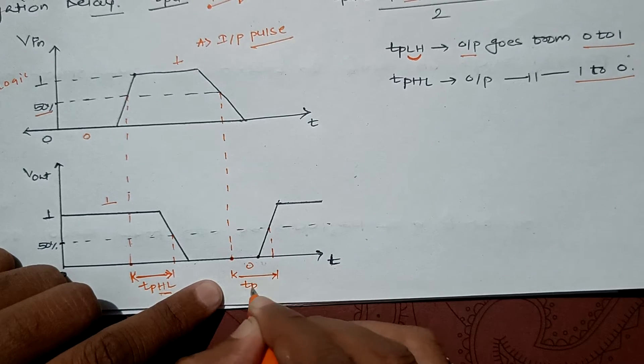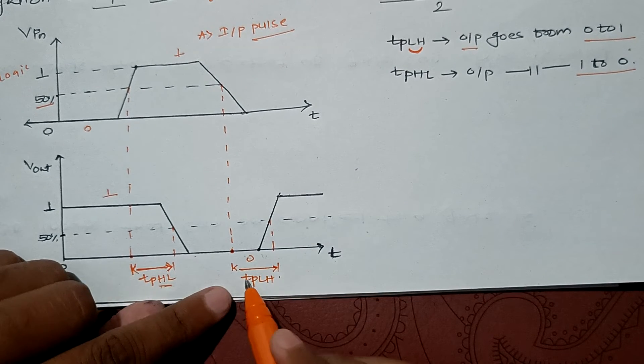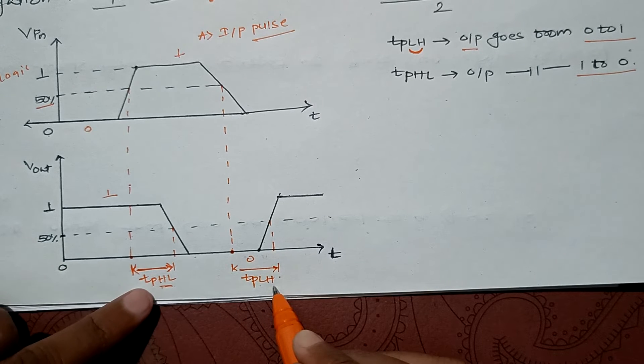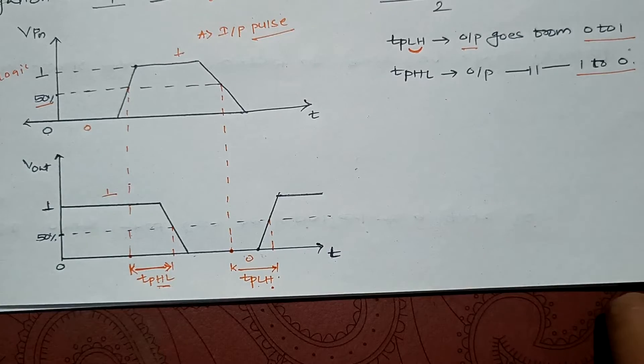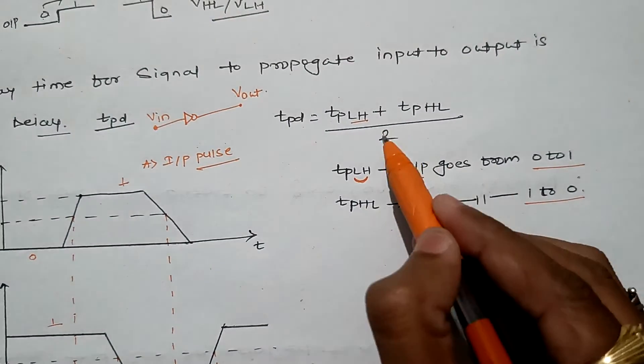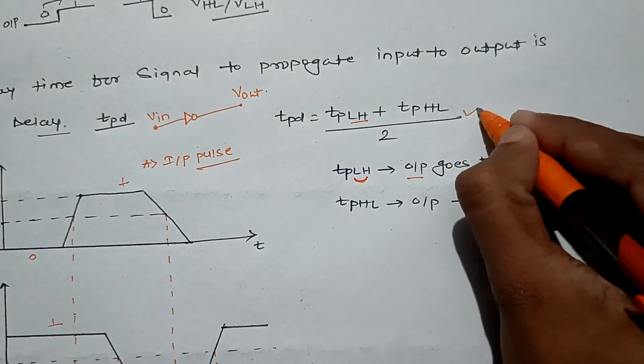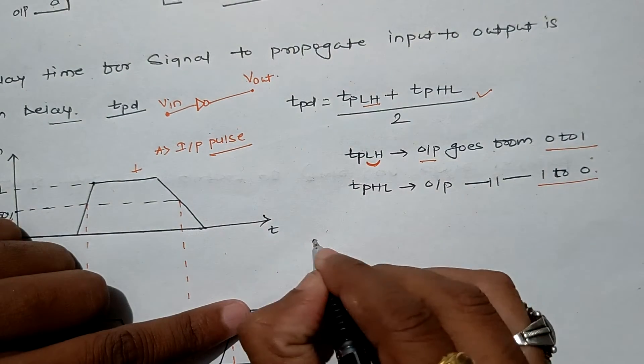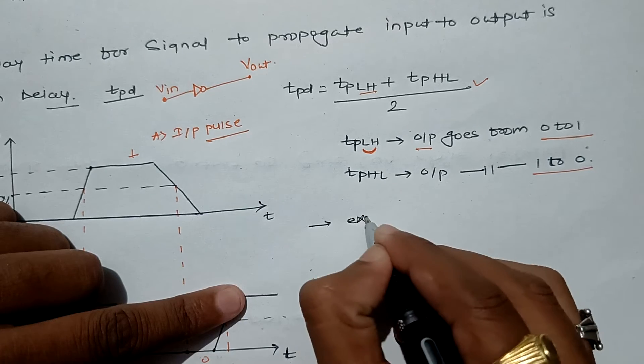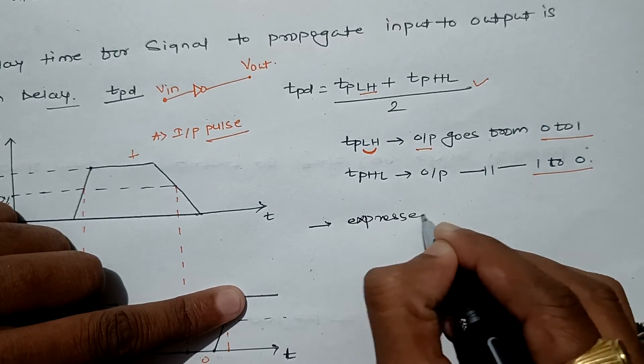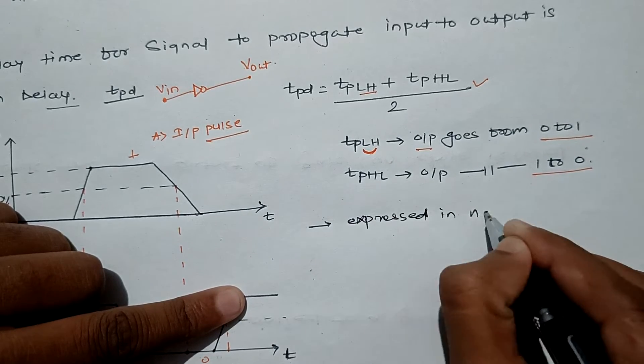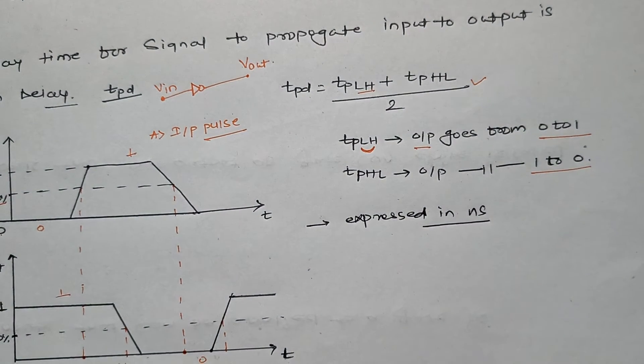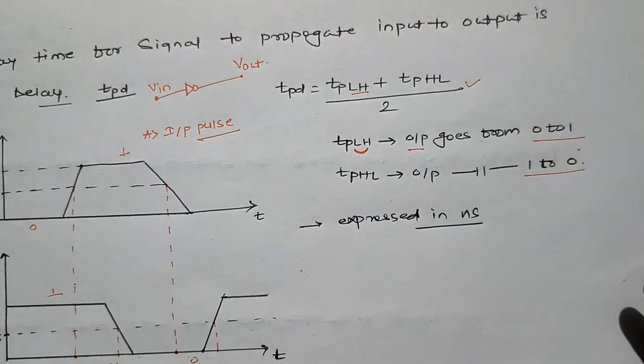Similarly for low to high transition, we take the 50 percent line from input and 50 percent line of output. This duration will be called as tpLH - the propagation time to switch from low to high. If we take its average divided by 2, we will get the propagation delay.